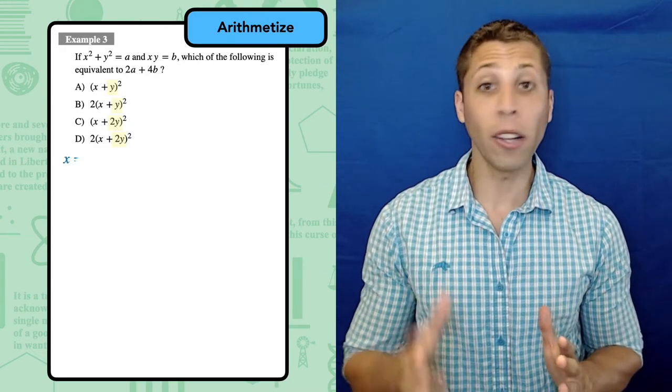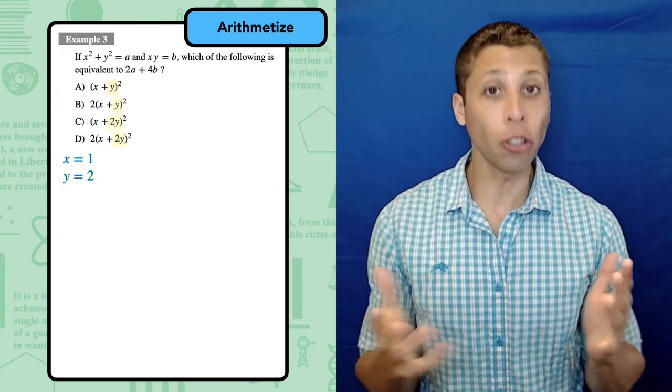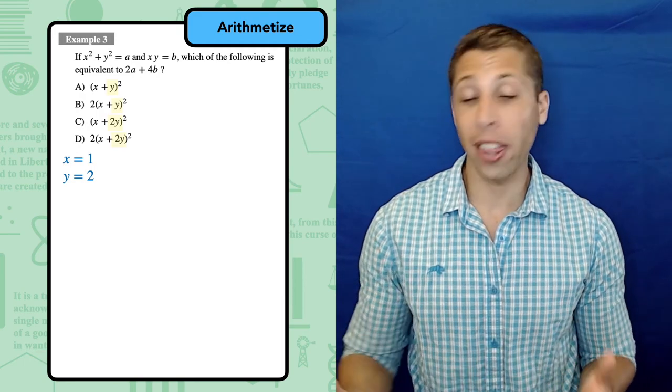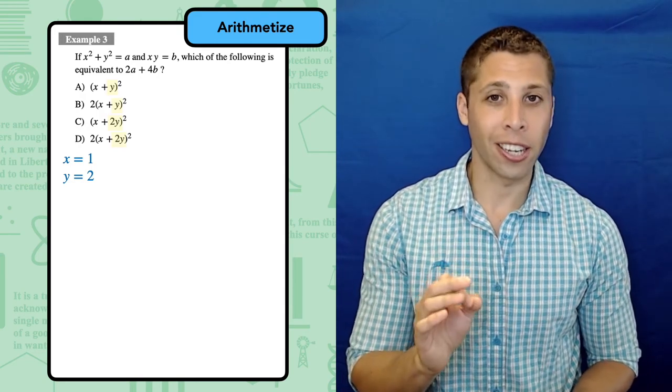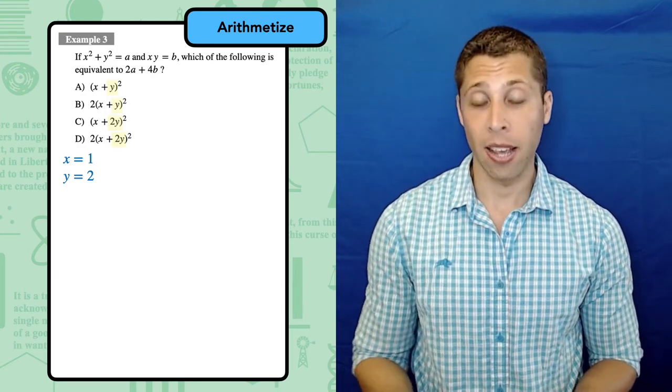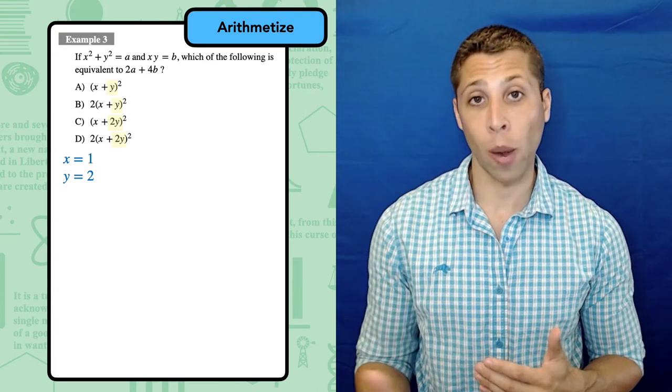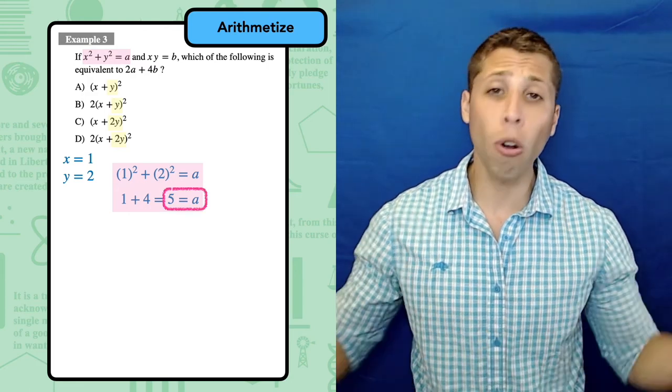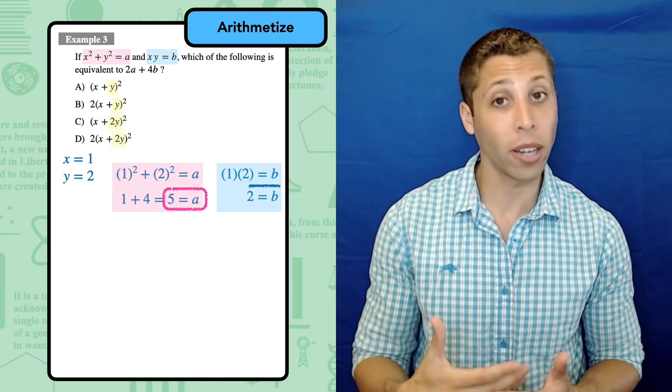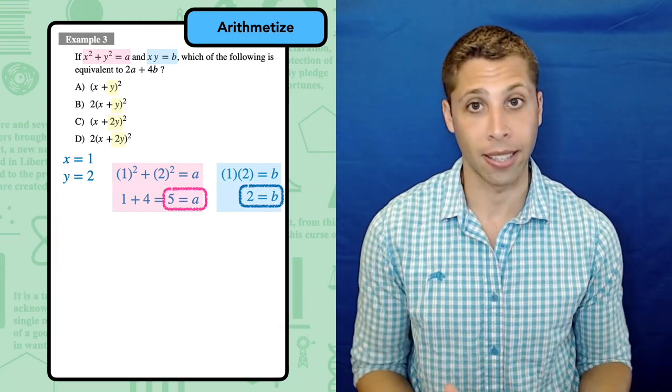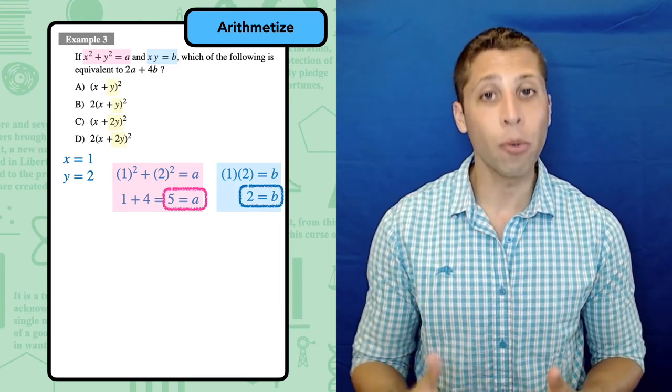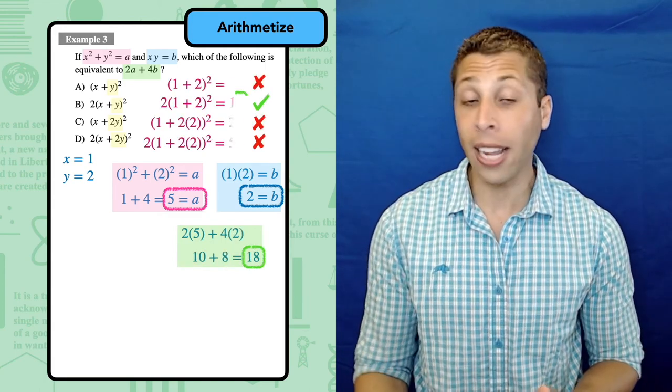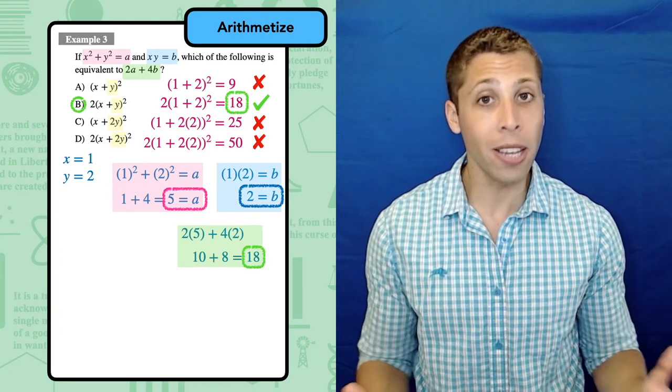I ended up picking one for x and two for y. You may have different numbers, but it shouldn't matter. That's the best thing about arithmetizing. The numbers we pick shouldn't really matter that much. So we can do whatever we think is easiest. The important thing here is that I did not make up random numbers for A or B. Those values are part of the given equations. So I solved for A and B based on the random numbers that I picked for x and y. Since there are so many letters and numbers flying around, we need to make sure that we stay organized so that we don't substitute the wrong number accidentally. Since A is 5 and B is 2, the value of 2A plus 4B would come out to 18. Substituting 1 in for x and 2 in for y in the answer choices, I see that only choice B also gives me 18.